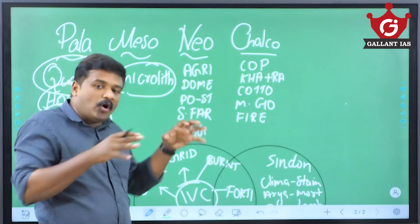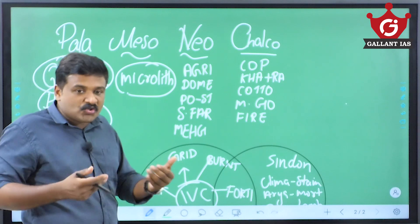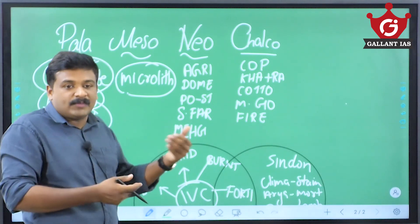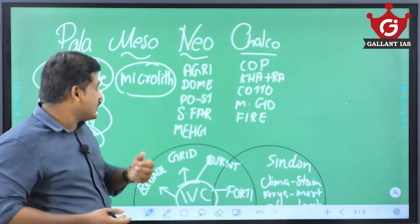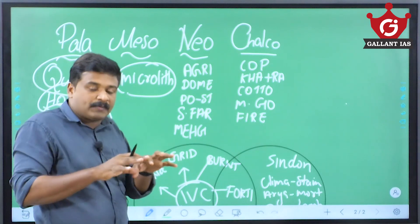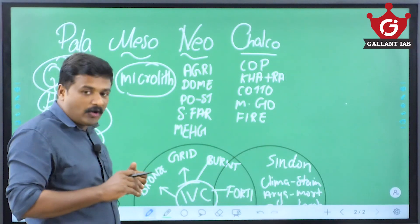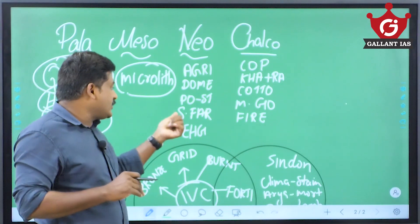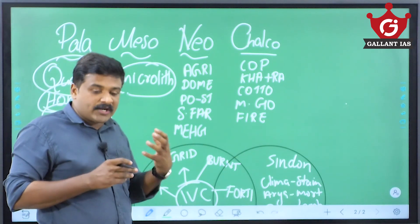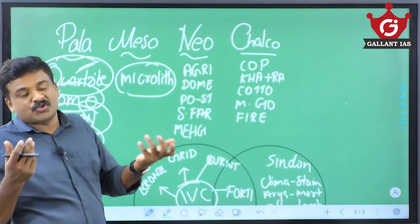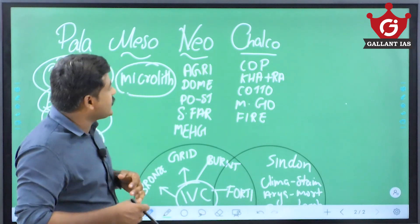There are different theories about when agriculture began. Some say agriculture started towards the end of the mesolithic; some say it started especially in Tamil Nadu. Anyway, agriculture became popular and was practiced during the neolithic period, along with domestication of animals, polished stone tools, and settled farming. Mehrgarh in Pakistan is the earliest site known for the earliest agriculture and cultivation.